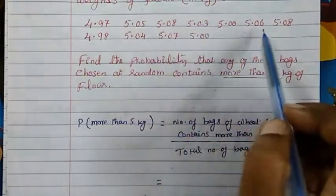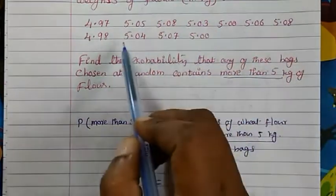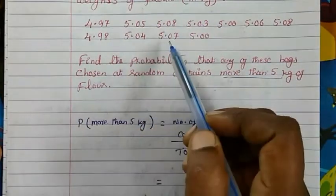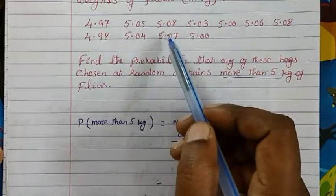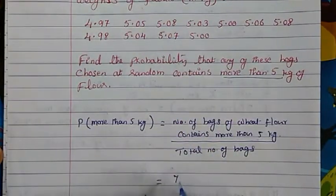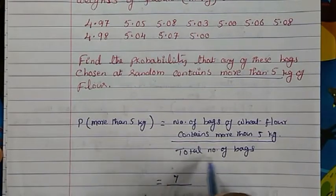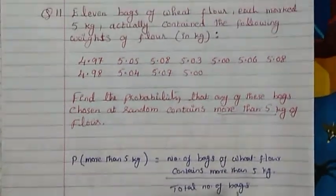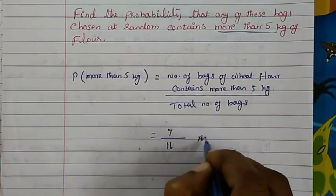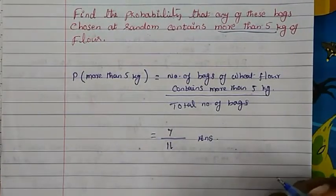You have 1, 2, 3, 4, 5, 6, 7. 7 bags are more than 5 kg. Then total number of bags are 11 bags. So 7 over 11. So this is our answer.